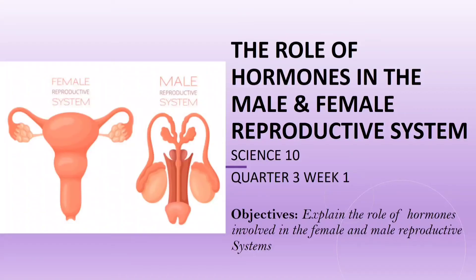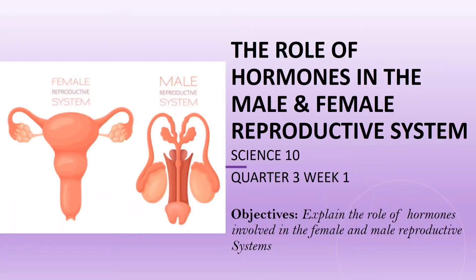Hello, Grade 10 iLearners. Our discussion for today is the role of hormones in the male and female reproductive system. Our objective for today is that you should be able to explain the role of hormones involved in the male and female reproductive systems. You should also be able to identify the glands involved in the endocrine system and the hormones each gland produces.